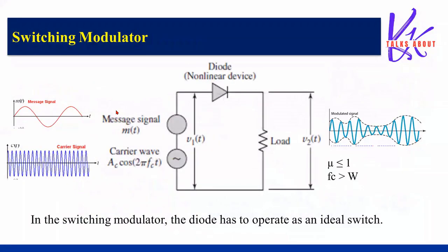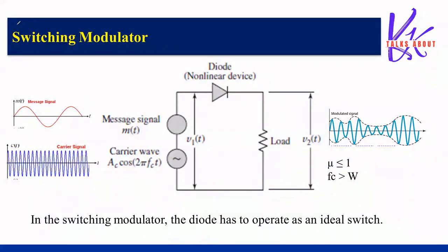Looking at the circuit diagram, we are giving a message signal and a carrier signal to a summer — that output is v1(t) — which is given as input to the diode, where the diode is acting as an ideal switch. The output v2(t) is then passed through a band pass filter to get the desired signal. Let us now see how mathematically we can represent and generate the amplitude modulated signal.